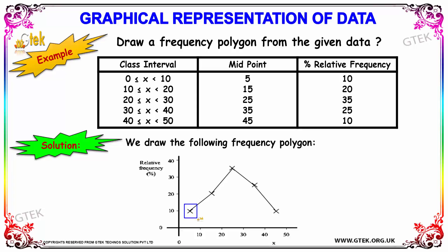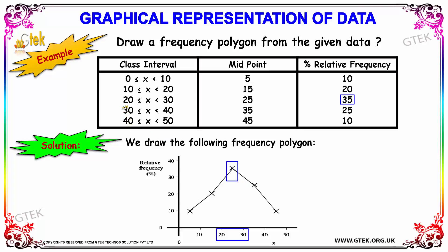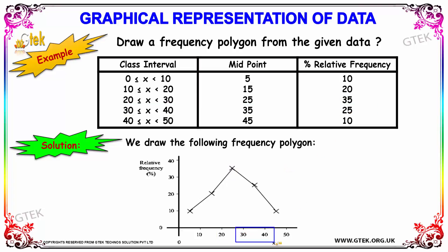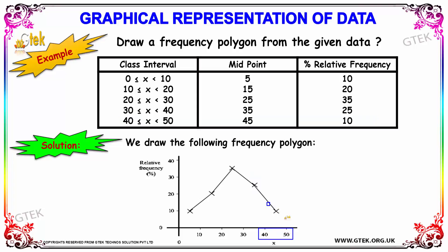For the range 10 to 20, the relative frequency is 20. For 20 to 30 it's 35. For 30 to 40 it's 25. And finally, for 40 to 50 it's 10. This is how we draw the frequency polygon.